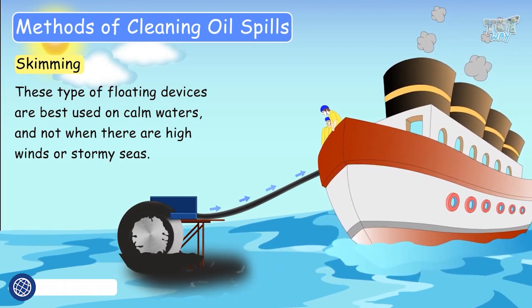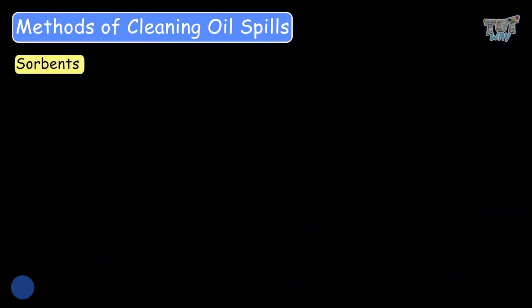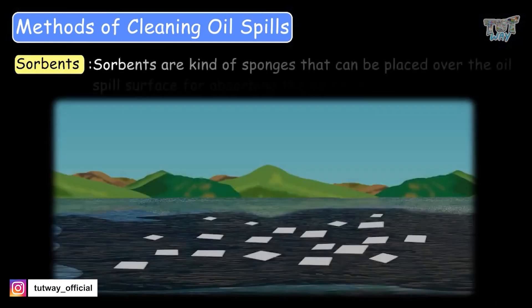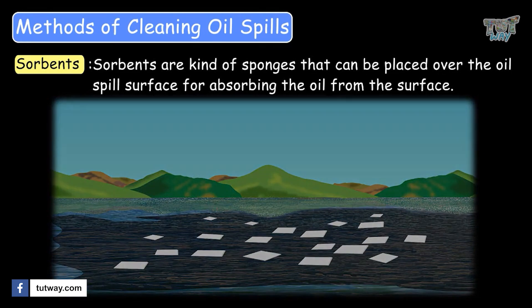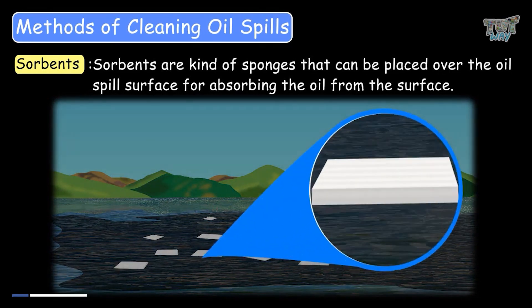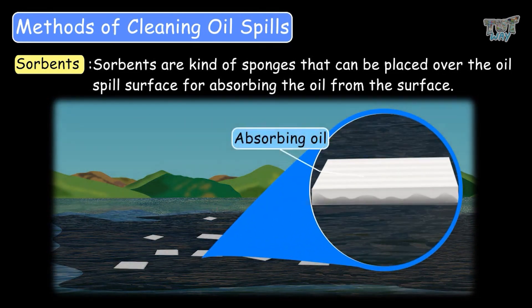Another popular method is using sorbents. Sorbents are a kind of sponge that can be placed over the oil spill surface to absorb the oil from the surface.